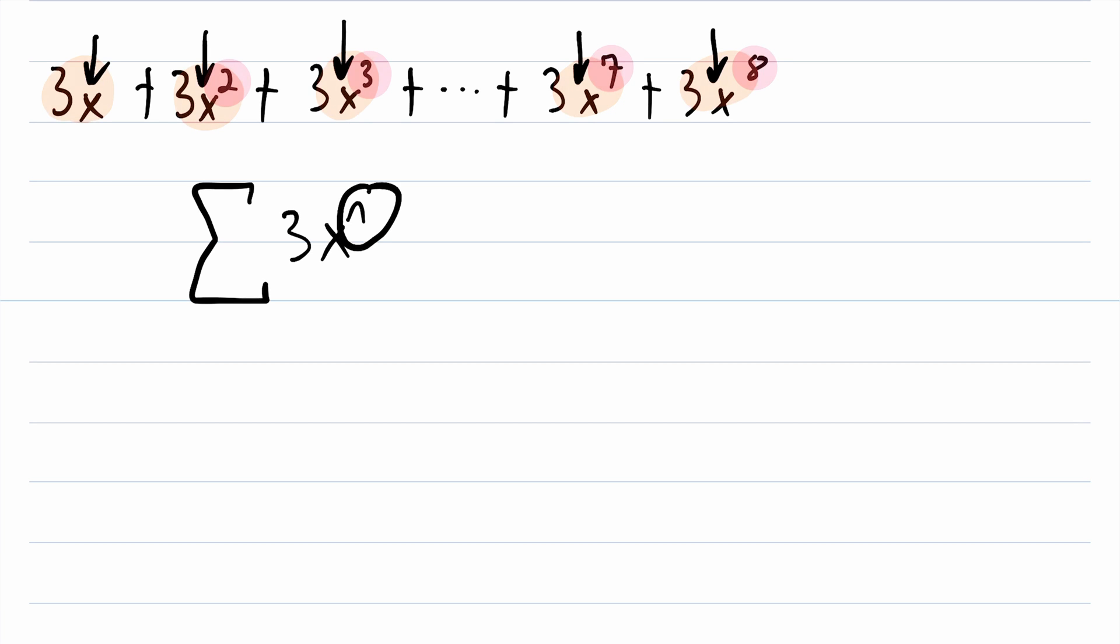So, what are our starting and stopping points for the index n? Well, the first term is three times x to the power of one, so we're going to start at n equals one, and then it goes on and on and on, and finally stops at eight. So, n is going to go from one to eight, and this is it.